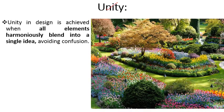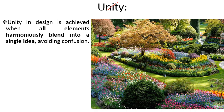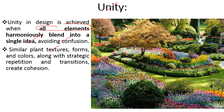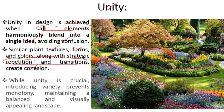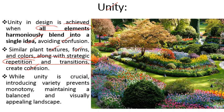Unity in design is achieved when all elements harmoniously blend into a single idea, avoiding confusion. Similar texture, forms, and colors along with strategic repetition and transitions create cohesion — a single united experience repeated at regular intervals. Introducing variety prevents monotony; different varieties blend together to avoid a monotonous appearance, maintaining a balanced and visually appealing landscape.